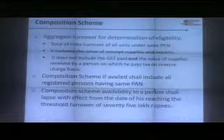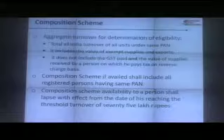Composition is essentially for people with small turnover below 75 lakhs. There are three categories: manufacturers, traders, and restaurants. Manufacturers pay tax at 2% — 1% SGST and 1% CGST. Traders pay at 1% — 0.5% SGST and 0.5% CGST. Restaurants pay at 5% — 2.5% SGST and 2.5% CGST.